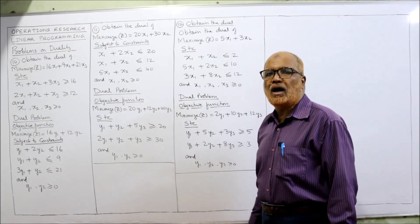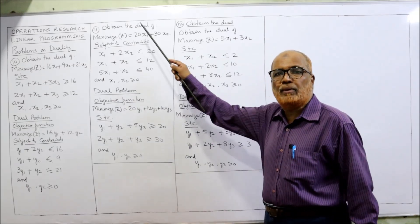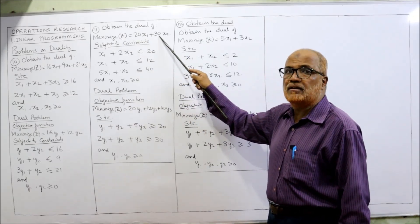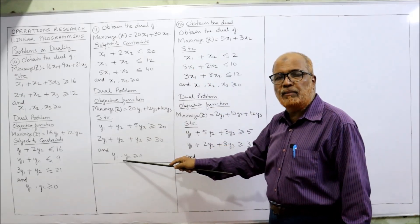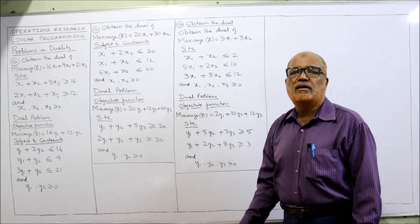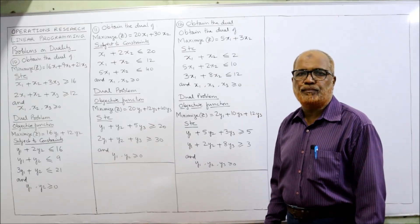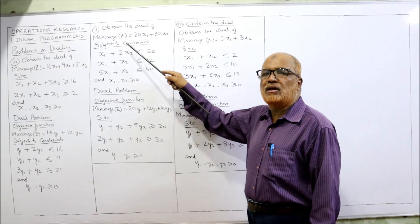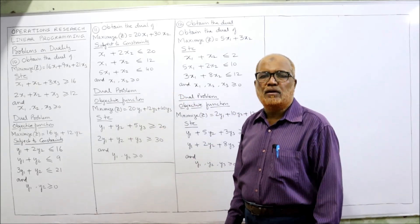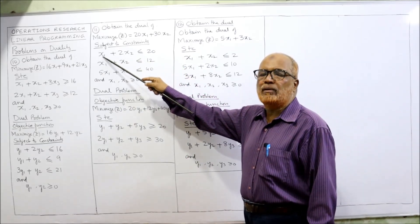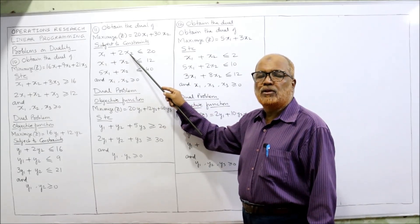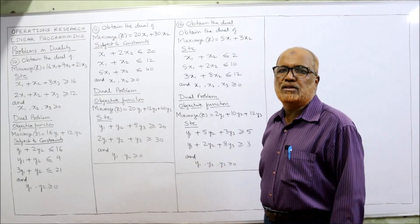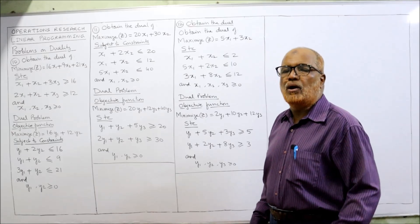The restrictions of the dual are the coefficients of the primal objective function: 20 and 30. So: Y1 + Y2 + 5Y3 ≥ 20 and 2Y1 + Y2 + Y3 ≥ 30. All variables Y1, Y2, Y3 ≥ 0. The three primal constraints gave three dual variables; the two primal variables gave two dual constraints. This is how we convert the primal into the dual.